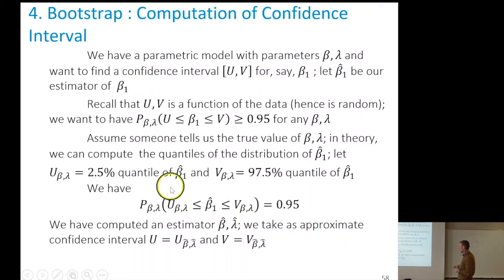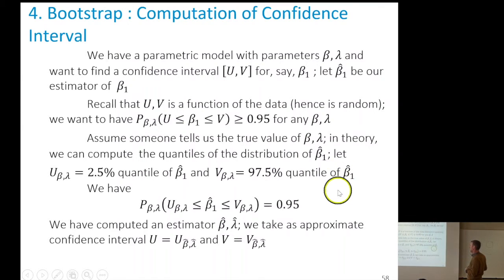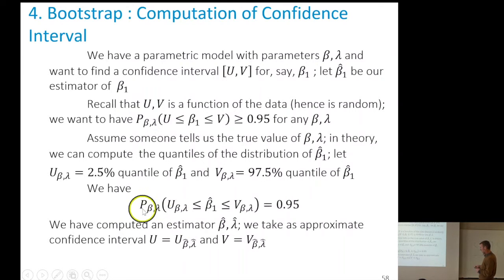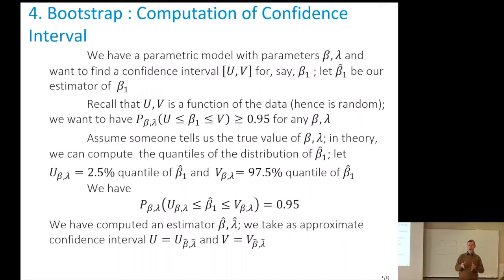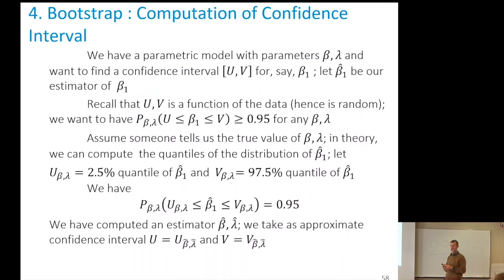One way to find a confidence interval, if we know beta and lambda, is to find the 2.5% and 97.5% quantiles of the distribution of beta 1 hat. We don't know beta and lambda, so the bootstrap method says: replace the unknown quantities beta and lambda by their estimated values. If those estimates are not too far off, that should be reasonable. That's the first step used in the bootstrap — whenever we don't know the parameters, we replace them by our estimates.